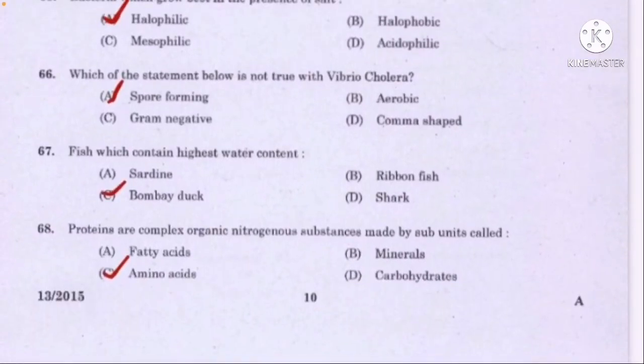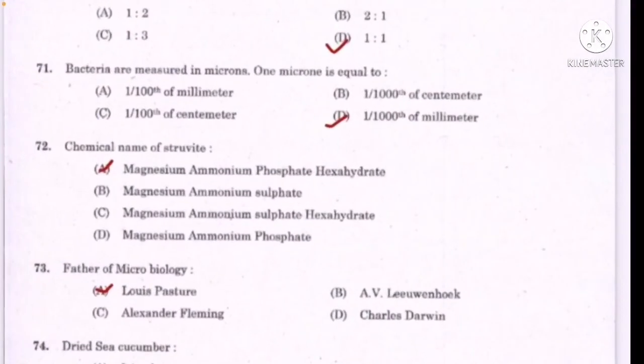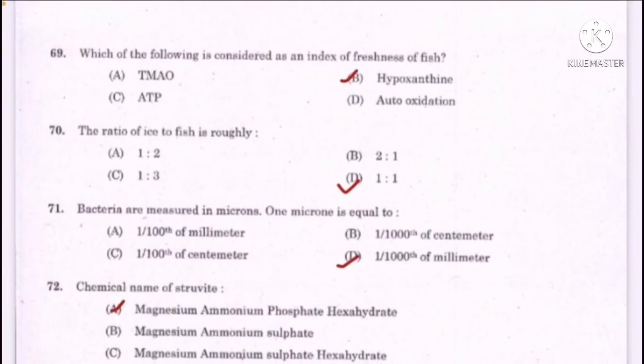Proteins are complex organic nitrogenous substances made by subunits called — correct answer option C: amino acids. Which of the following is considered as an index of freshness of fish — correct answer option B: hypoxanthine. The ratio of ice to fish is roughly — correct answer option D: one is to one. Bacteria are measured in microns; one micron is equal to one-thousandth of a millimeter. Chemical name of struvite — correct answer option A: magnesium ammonium phosphate hexahydrate.